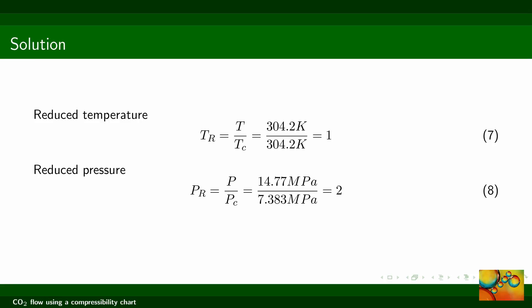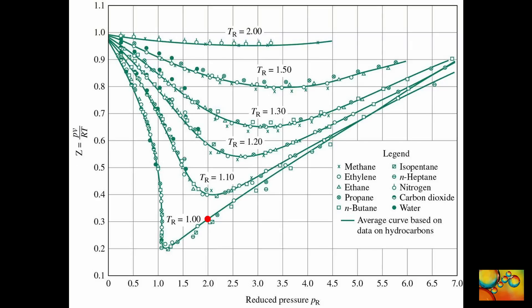At the given problem conditions, the reduced temperature is equal to 1 and the reduced pressure is equal to 2. We can now enter the diagram using these two numbers. This is the red dot on the compressibility chart and it corresponds to a compressibility factor of about 0.31.